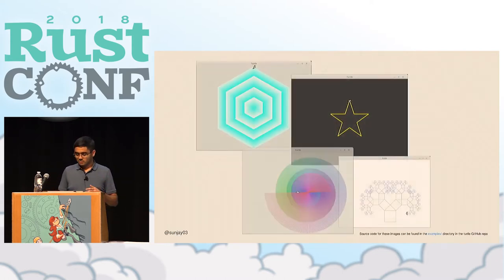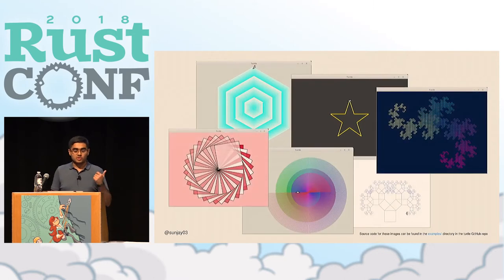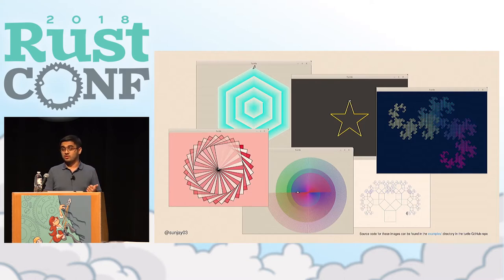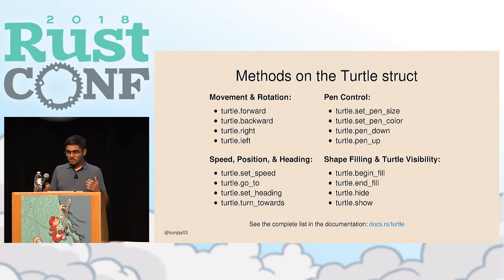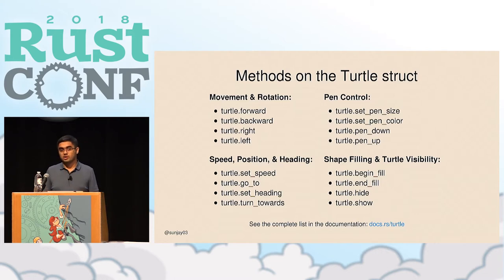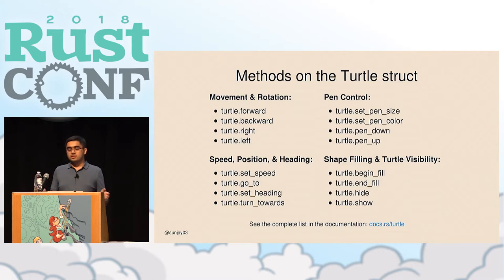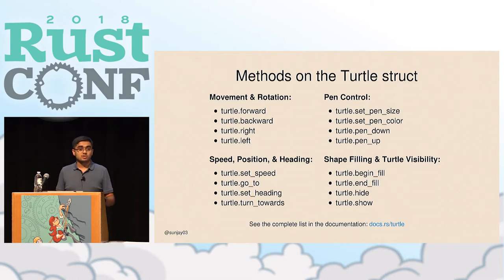You can draw all kinds of amazing things just by telling the turtle where to go. All of the example drawings were created in Turtle, and some were contributed by people in the Rust community. You can find the source code in the examples directory of the Turtle GitHub repository. The interface provided by Turtle is fairly simple without being limited in functionality — there are movement and rotation methods, methods for controlling walking speed, pen manipulation, filling shapes, and controlling turtle visibility. You get all of these ways to draw with a very simple mental model: it's just a turtle moving around the screen.